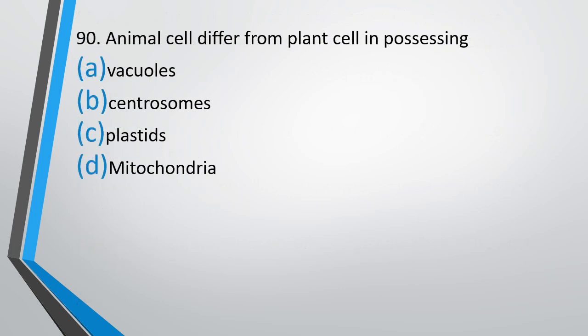Question number 90. Animal cell differs from plant cell in possessing: vacuoles, centrosomes, plastids, or mitochondria? Correct answer is Option B. They possess centrosomes.